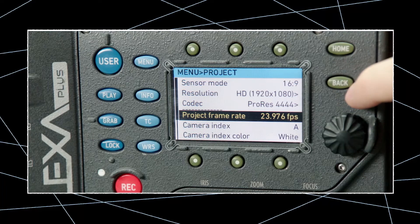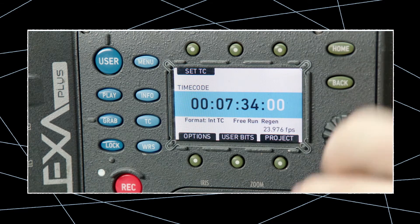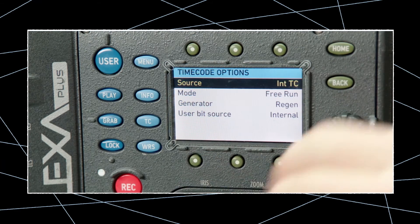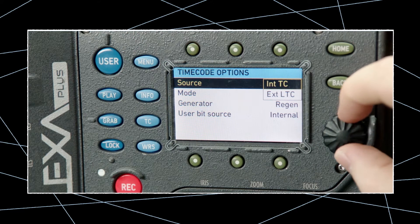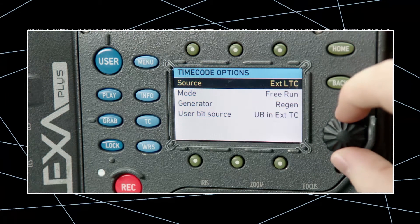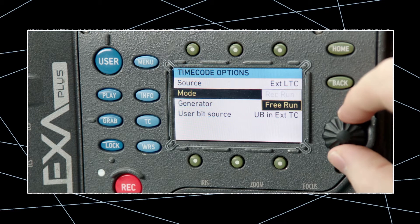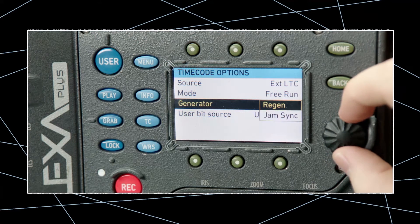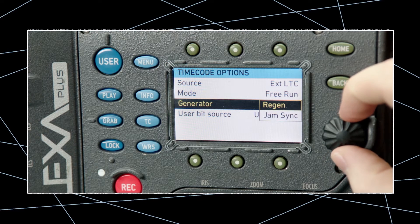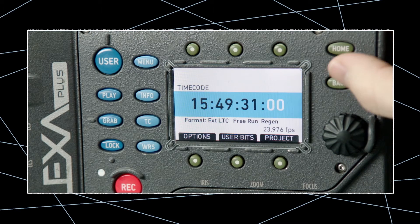To adjust the ARRI ALEXA to read external timecode, go to the TC menu, choose options, and then change the timecode source to external LTC. Just below, we need to change the mode to free run, and then finish the camera portion of the setup by changing the generator to regen.